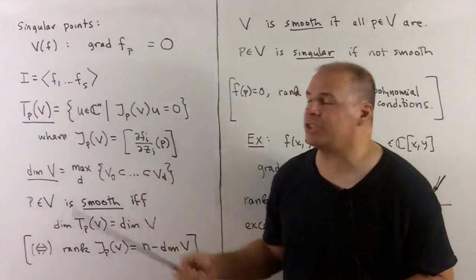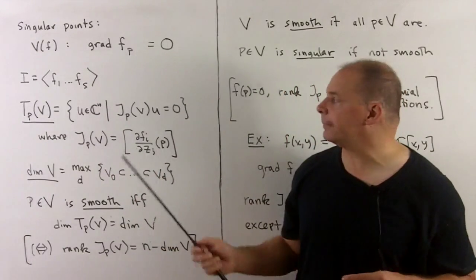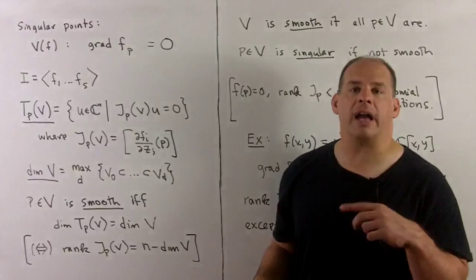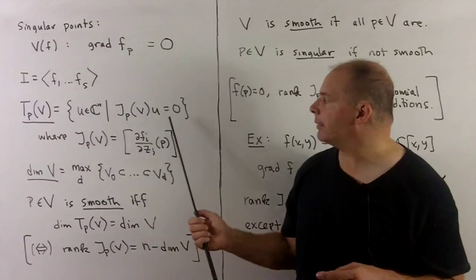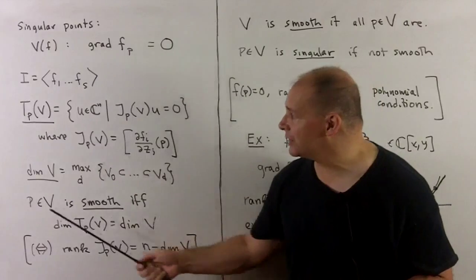The tangent space at P is just the null space of the Jacobian at P. Here we want all vectors in C^n that are perpendicular to all gradients at the same time, and then we can translate this vector space to the point P.